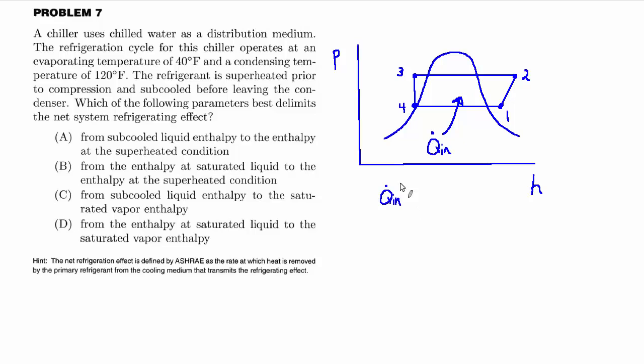So I'll put a little arrow here and say this is Q in. You can think of Q in as being the refrigerating effect, and that would be equal to the mass flow rate around the cycle times the change in enthalpy across the evaporator, so H1 minus H4. To answer their question about what delimits the net system refrigerating effect, it's whatever H1 and H4 are.